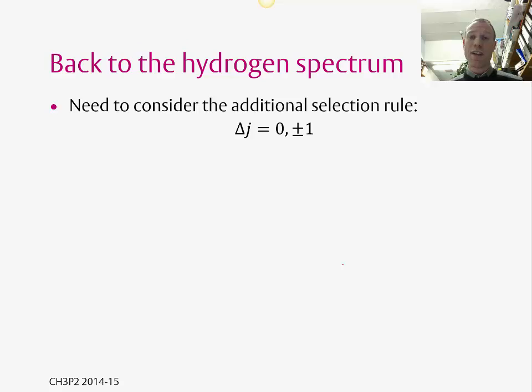So we can now go back to the hydrogen spectrum and see what effect this has now, thinking about these individual states, has on the hydrogen spectrum. We've now got this total angular momentum, J. So there's now an additional selection rule which says that delta J is equal to 0 or plus or minus 1.